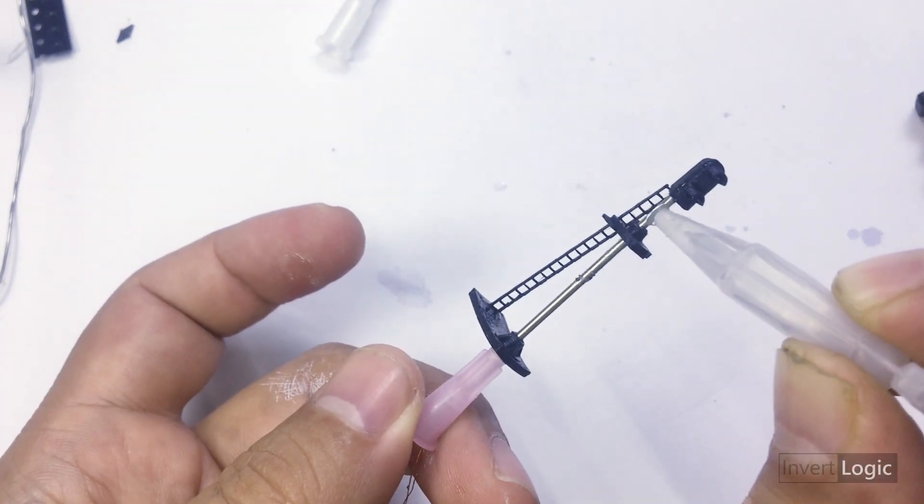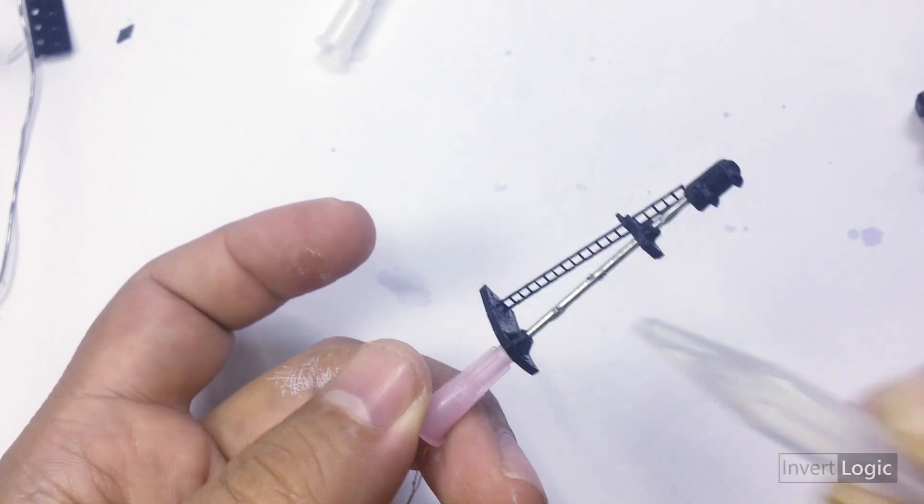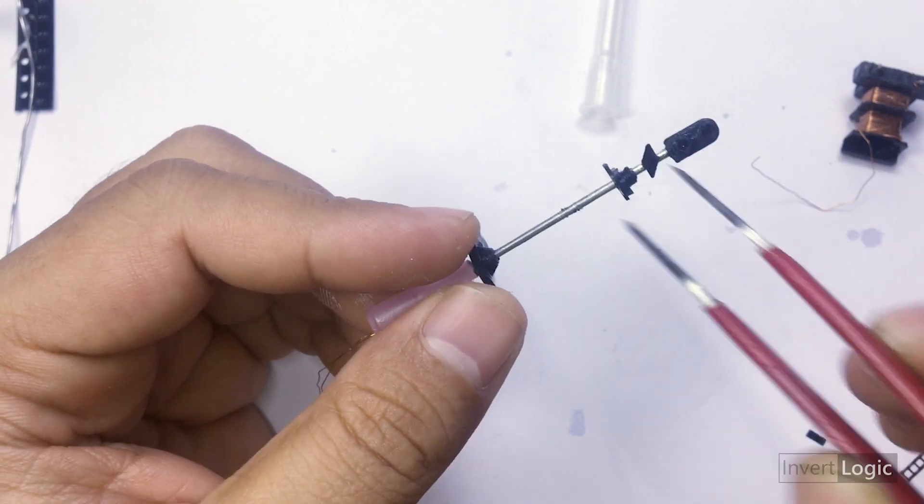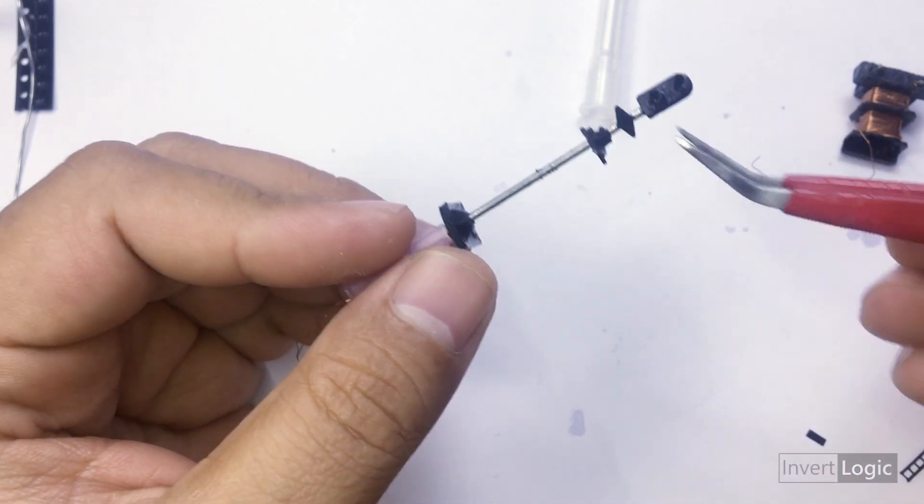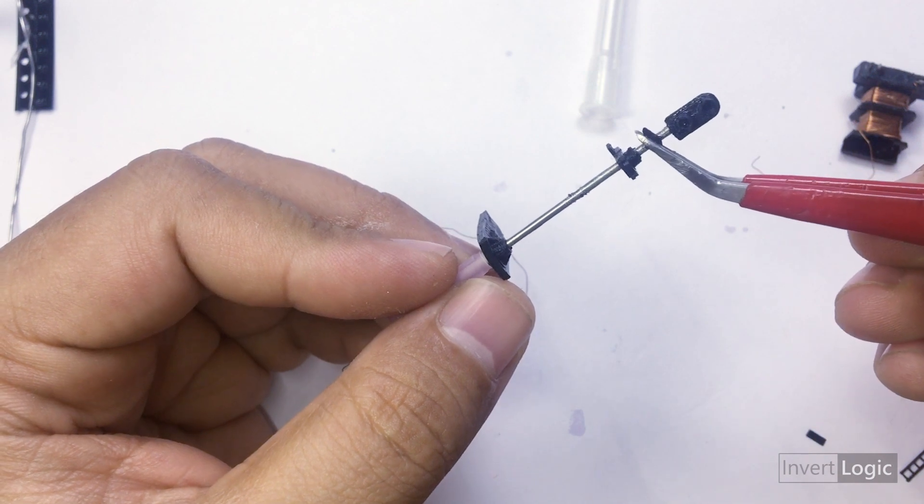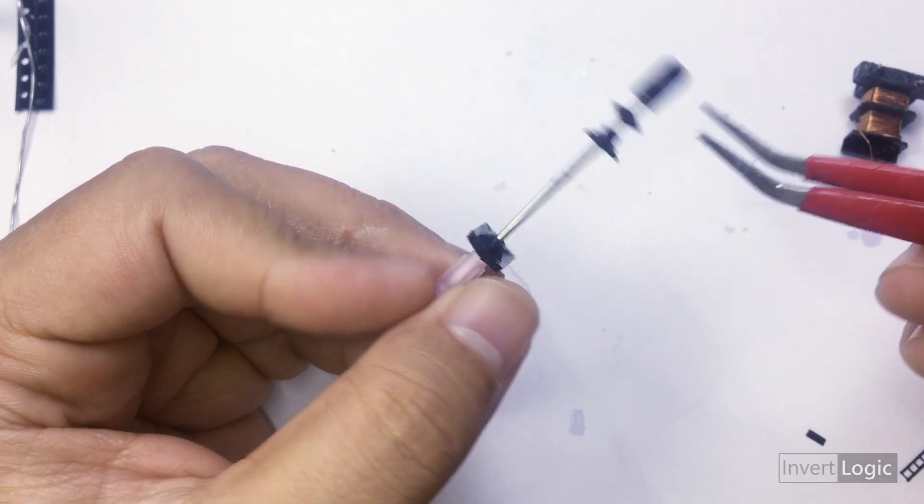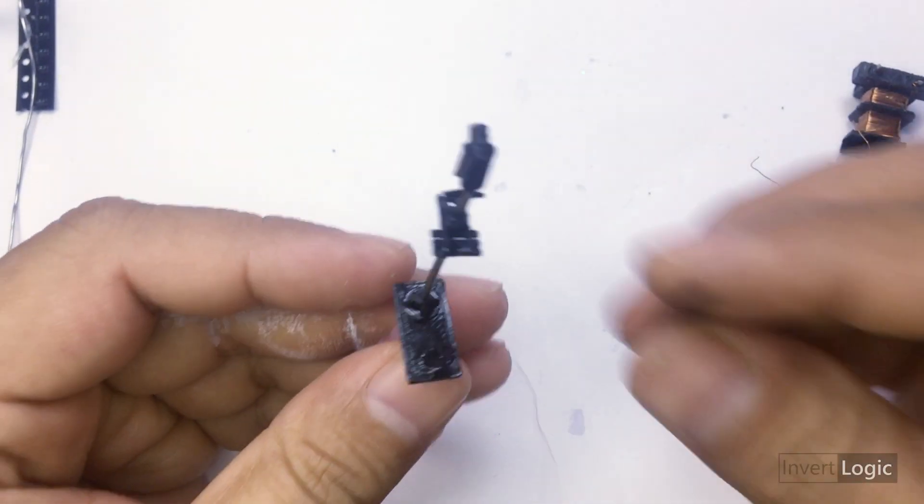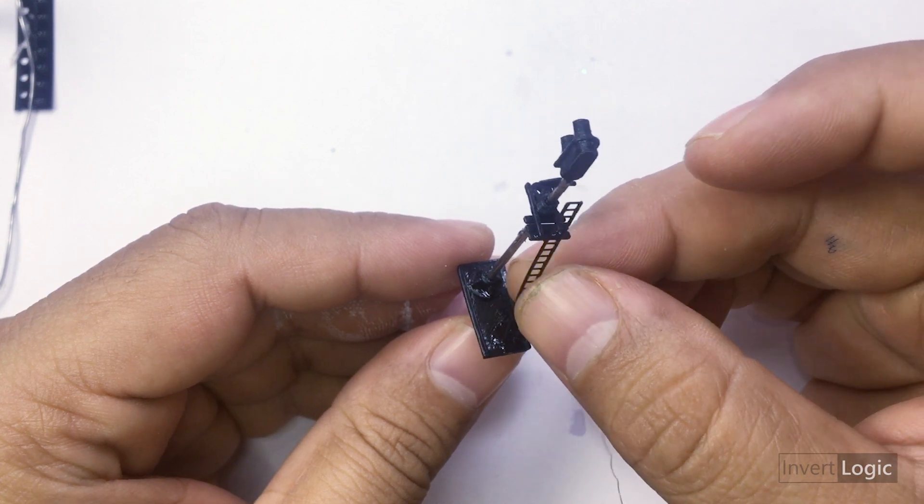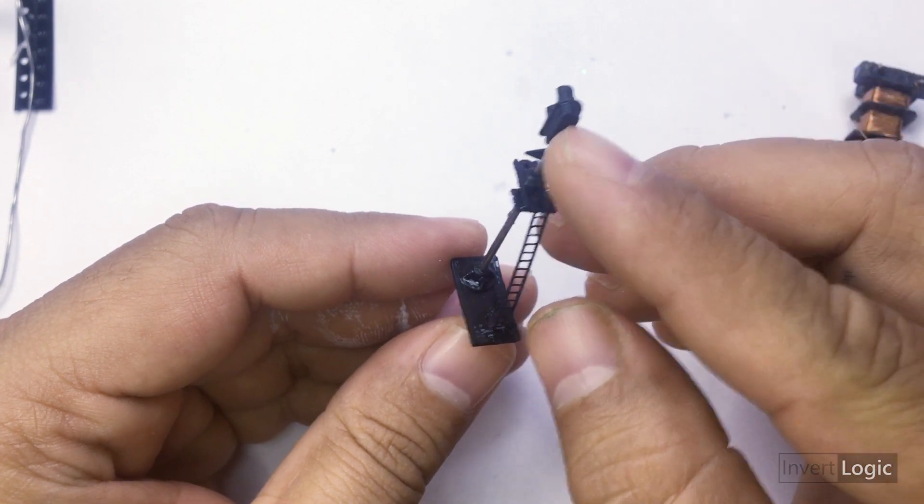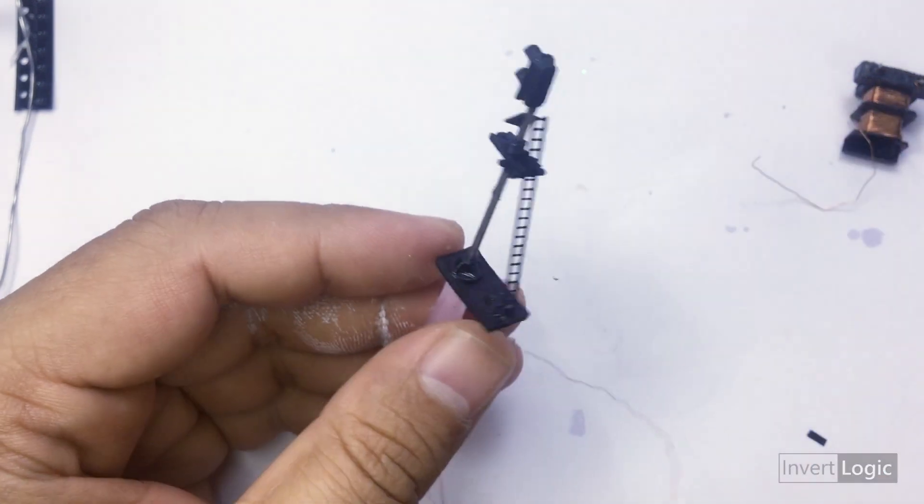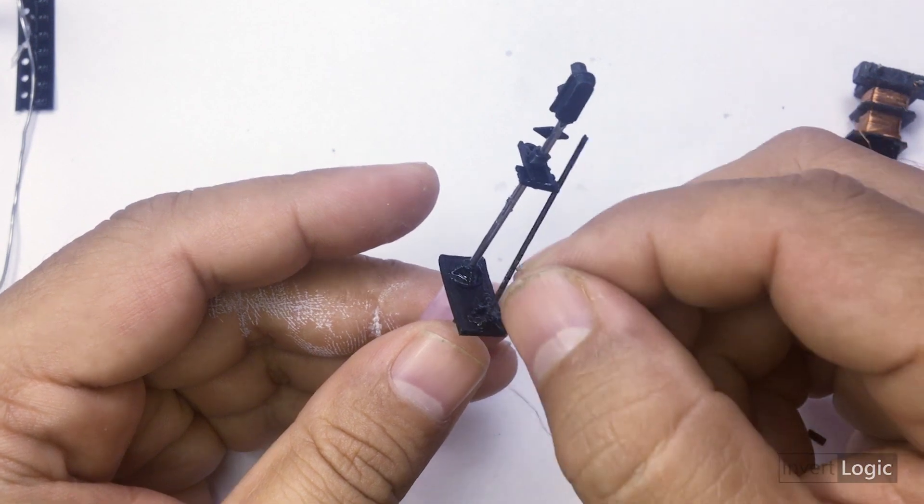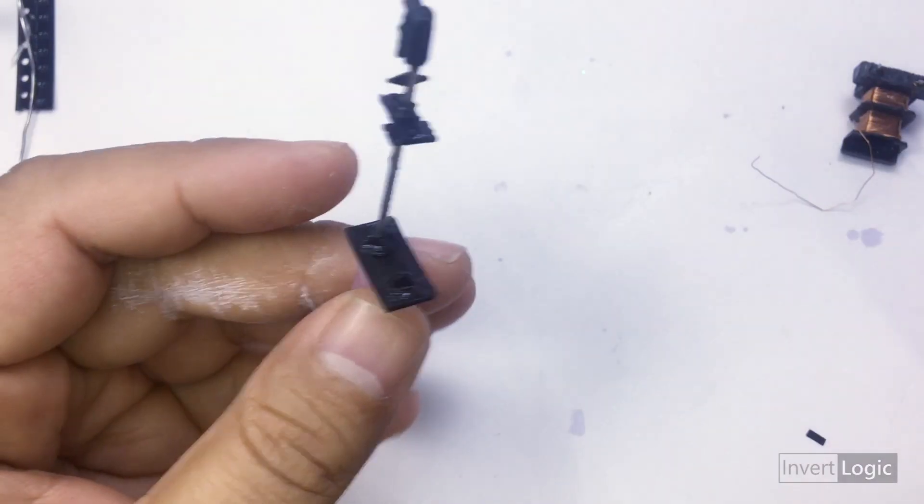I would recommend using gloves or anything protective from that glue because it's very hard to remove after it is dried. It basically dries very fast. I'm trying to fix stuff here because sometimes the parts that I'm sticking may come down. They may not stick properly, so I had to try again and again just to make sure it is stuck there properly.